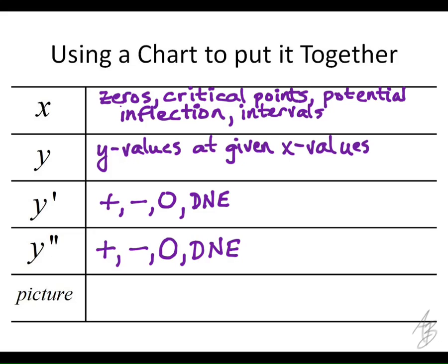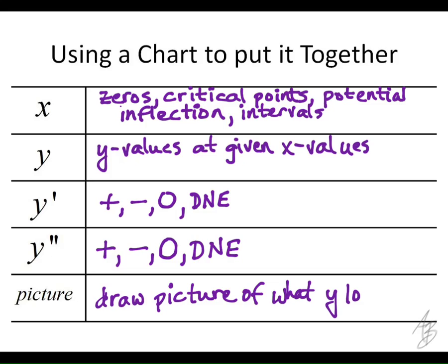In the bottom row of the chart we're going to draw a picture of what the function might look like given the information, whether it's for a point or for an interval between points. Once we get all this information into the chart, we can transfer it to a graph and get a pretty good idea of what the graph looks like without needing a graphing utility. Let's look at an example.